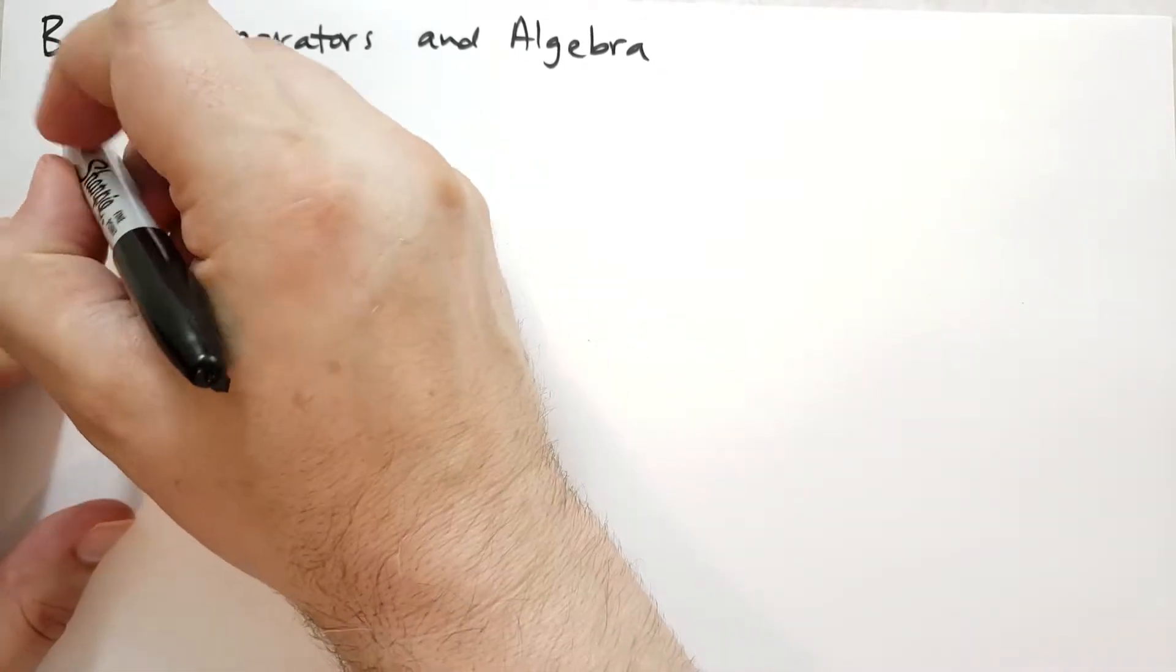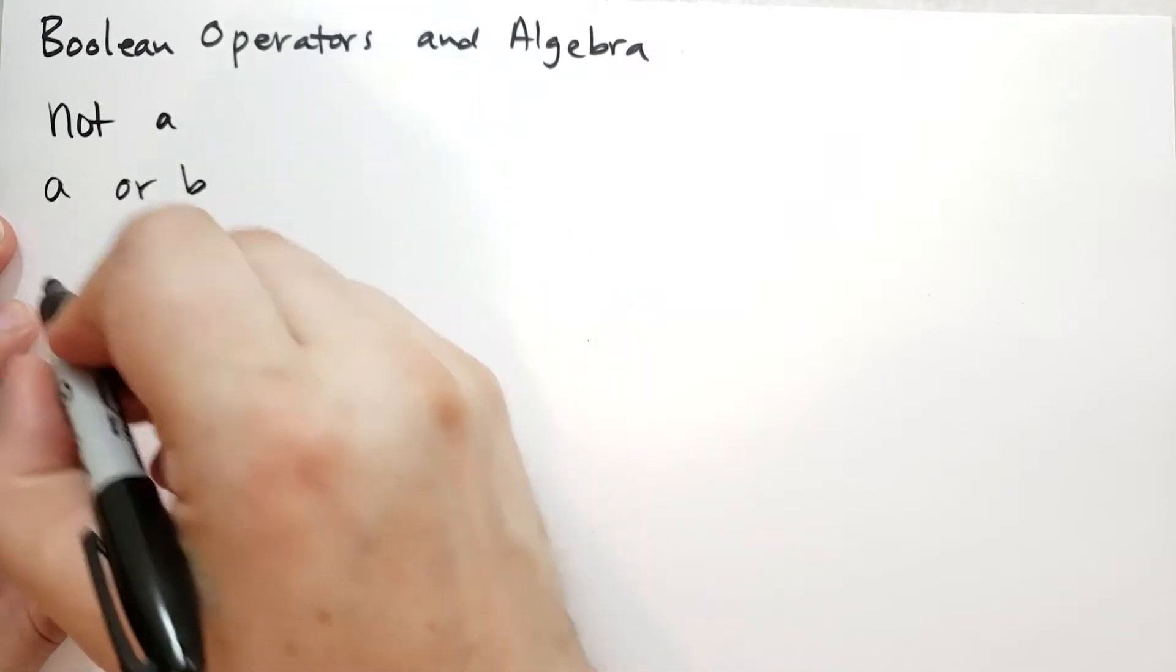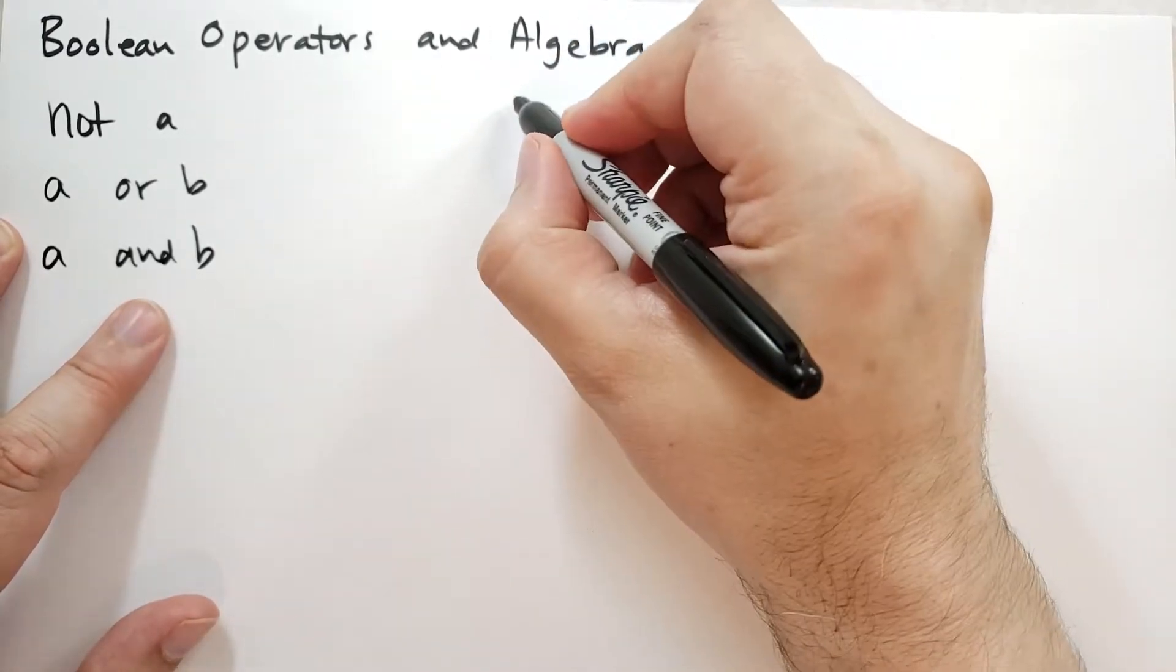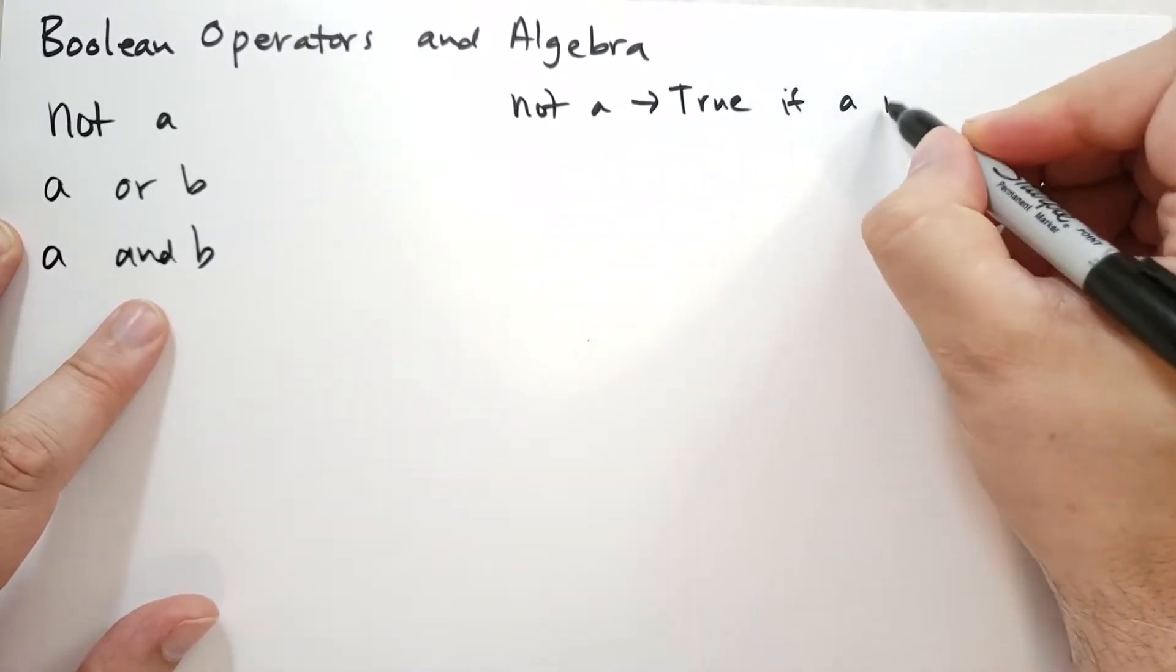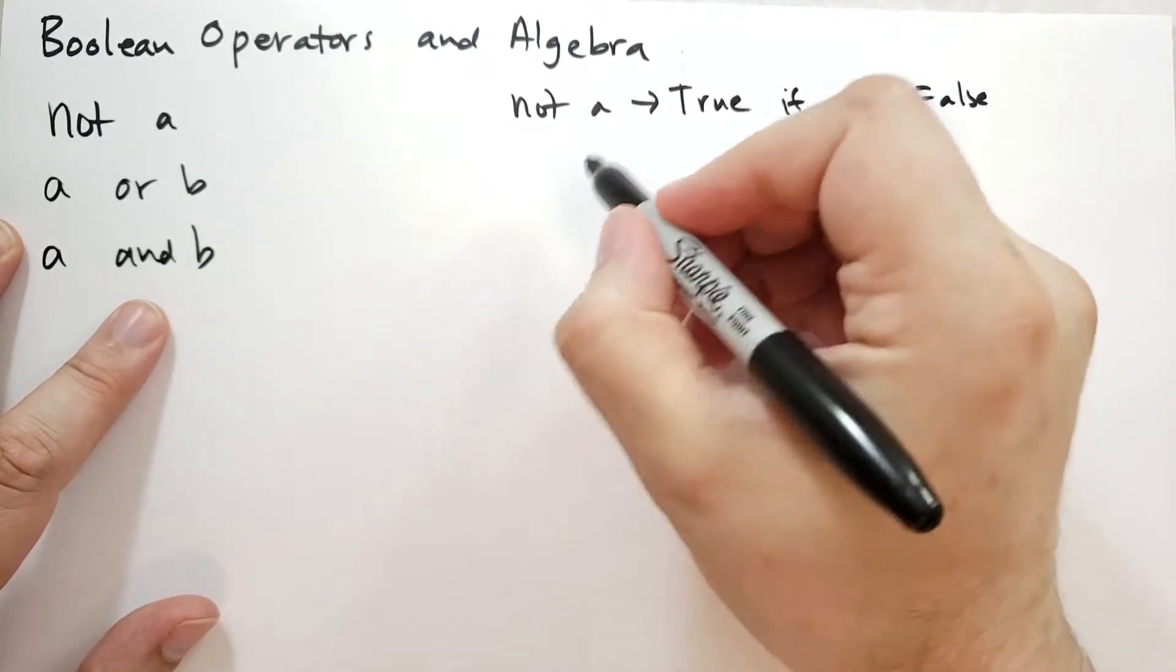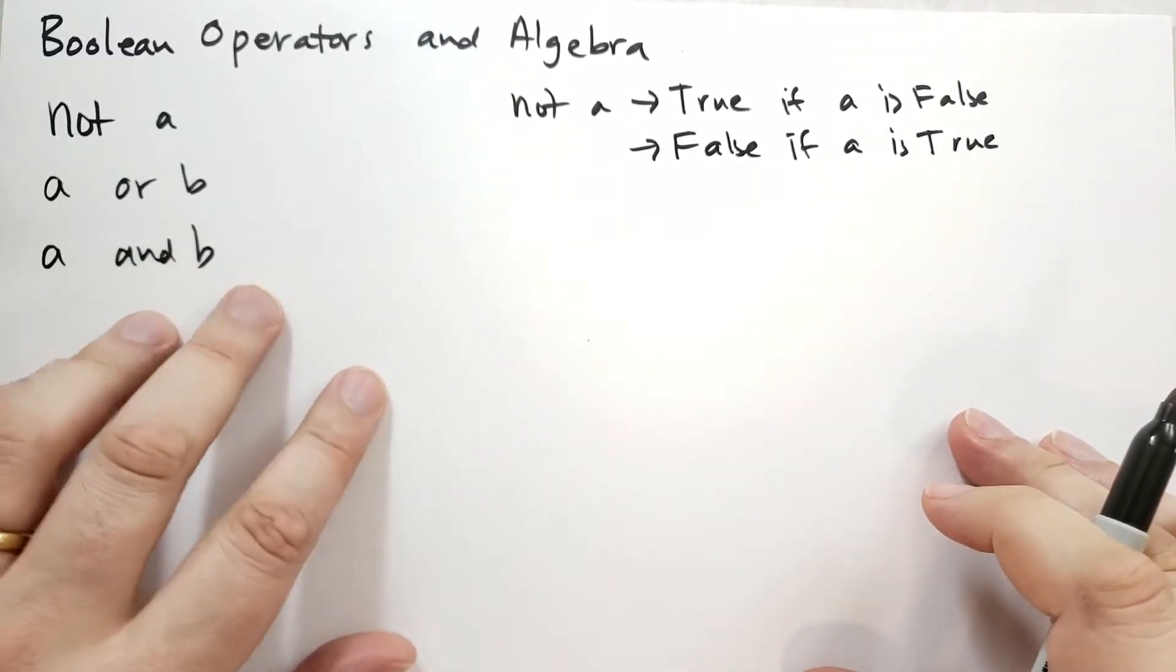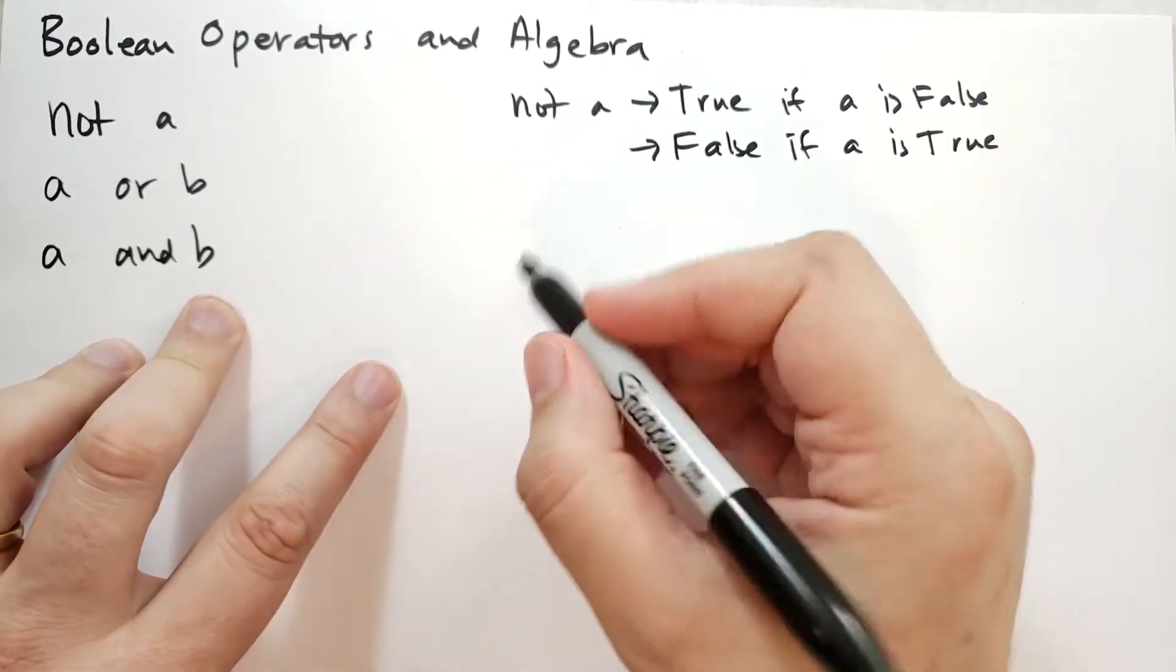So first, the Boolean operators. We have the Boolean operators NOT, we have OR (A OR B), and we have AND (A AND B). A and B are just expressions, right? What NOT does is NOT A will give you true if A is false or any of those false values (none, zero, or any one of those things), and it will give you false if A is a true value, which is anything but none and zero and empty sequences and stuff like that. Pretty simple, not just basically inverts.